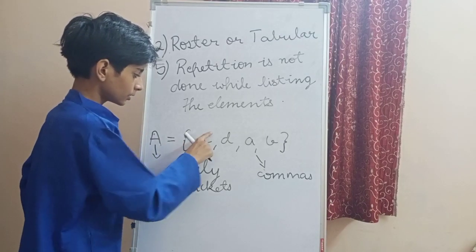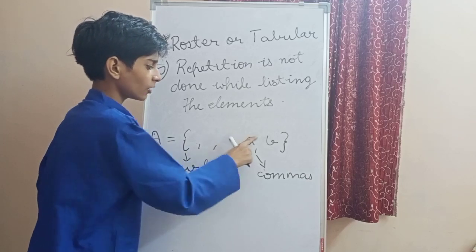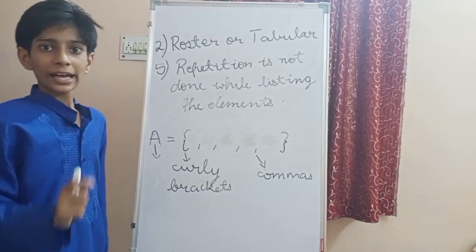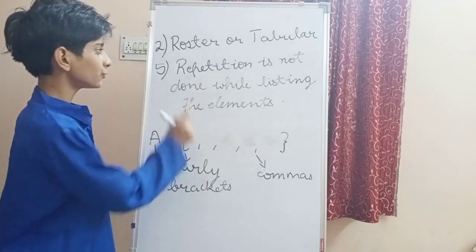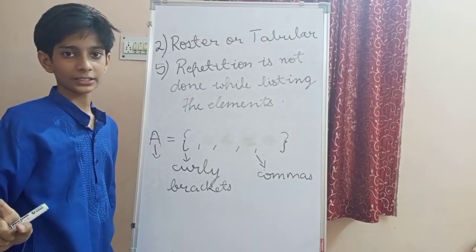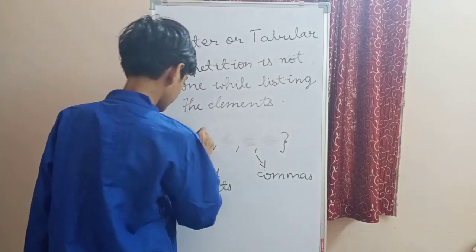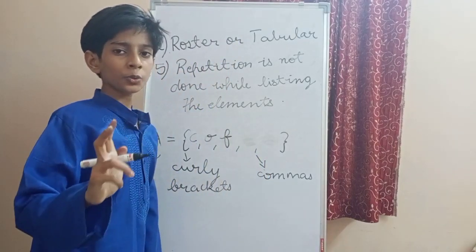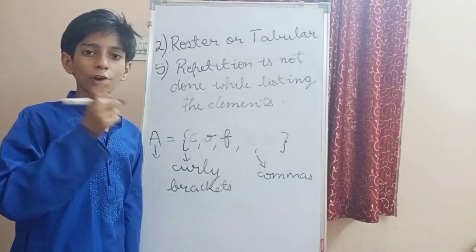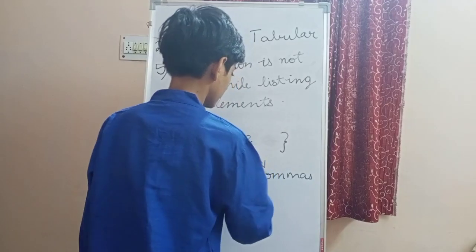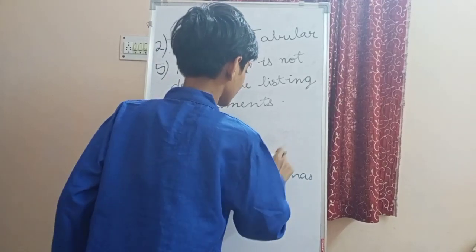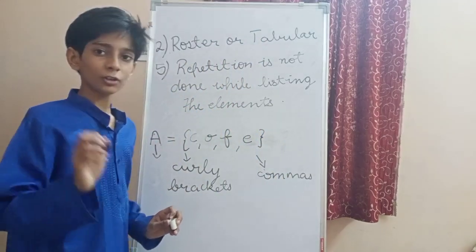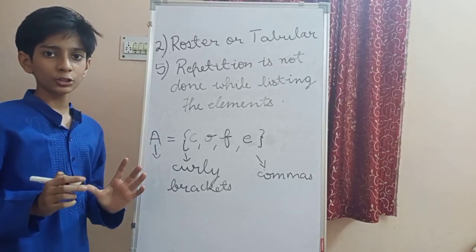For example, take the set of letters in the word 'coffee'. In coffee, F appears two times and E appears two times. So we write only one F and one E. The set becomes {c, o, f, e}. Because the fifth rule says repetition is not done while listing the elements.